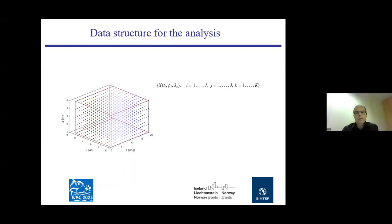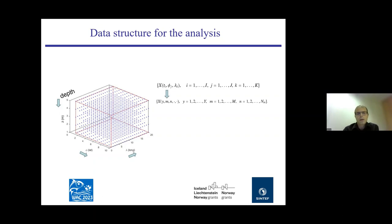When you run an ocean model you get a lot of data out. This can be represented as a cube with depth, latitude, and longitude axes — one cube per variable per time step. We have saved output every hour through the 10-year simulation, so you get lots of cubes and lots of data. To do statistical analysis on that cube, we rearrange the system so that we have years, month, and time within month across all the horizontal grid points.